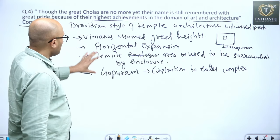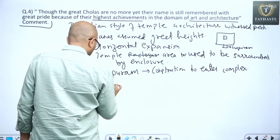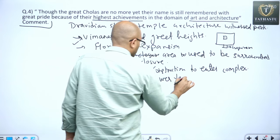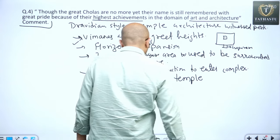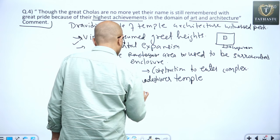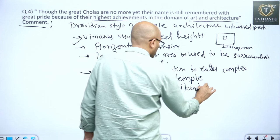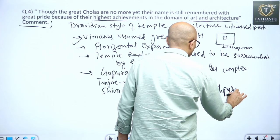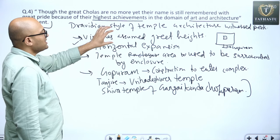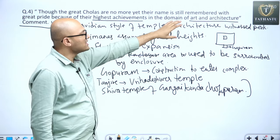So these are examples, prominent examples, highest Vimana, we will see example of Tanjore ka Brihadeshwara, Brihadeshwara temple made by Raja Raja, other example, Shiva temple of Gangaikonda Cholapuram, Cholapuram, some of the finest example of Dravida temple, Dravida style of temples during the Cholas which reflects highest achievements of Cholas in art and architecture.